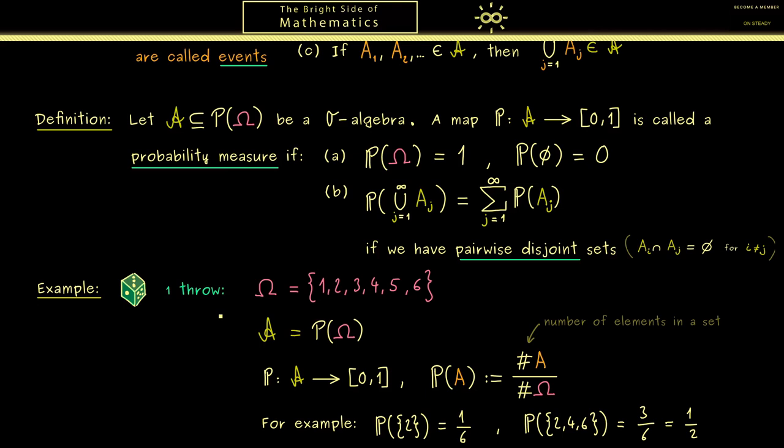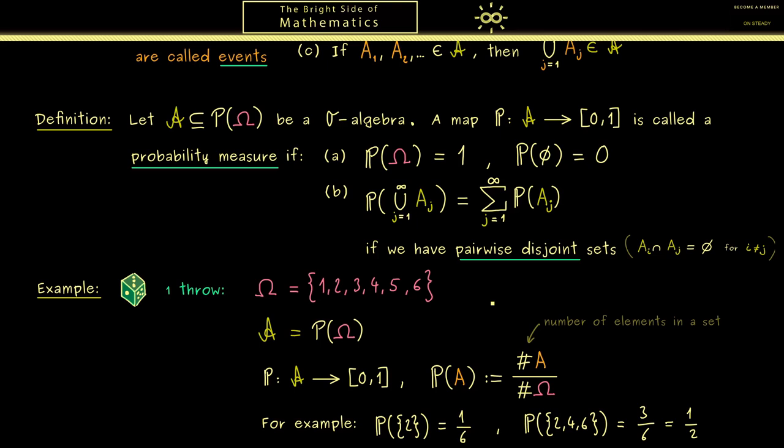And in later videos you will see we can easily expand this whole model to cover also other examples. Okay, now for closing this video, I give you a small exercise about probability measures. Try to prove that for a general probability measure P and an event A, the probability of the complement is 1 minus the probability of A. So this is a very nice property that immediately comes out of the two other properties here.